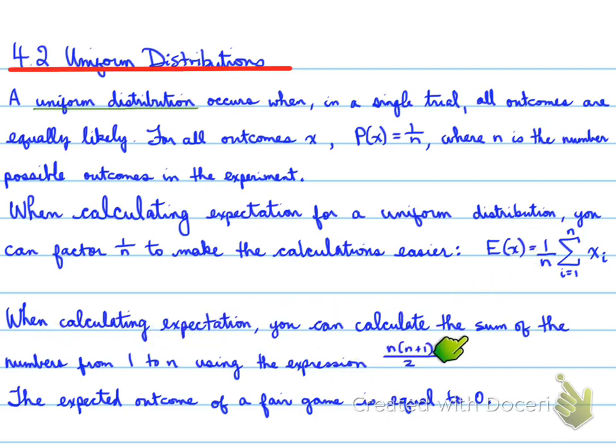When calculating expectation, you can calculate the sum of the numbers from 1 to n using the expression n times n plus 1 all over 2.